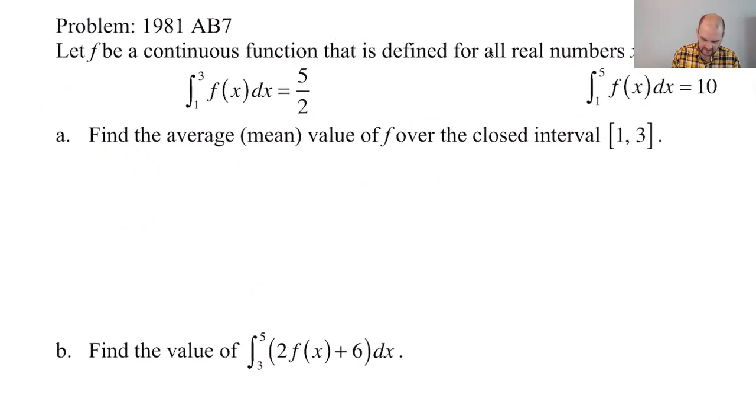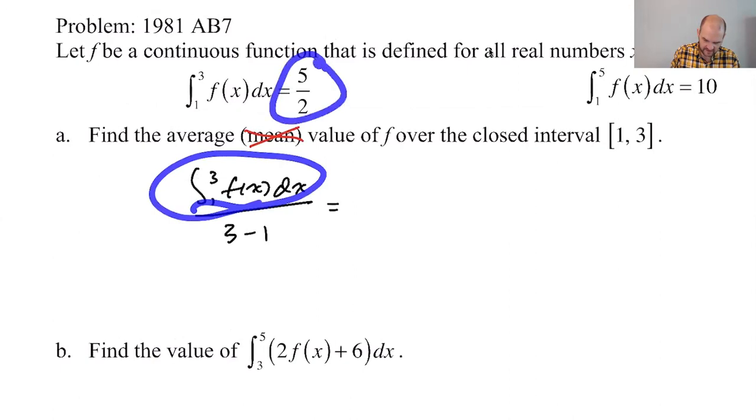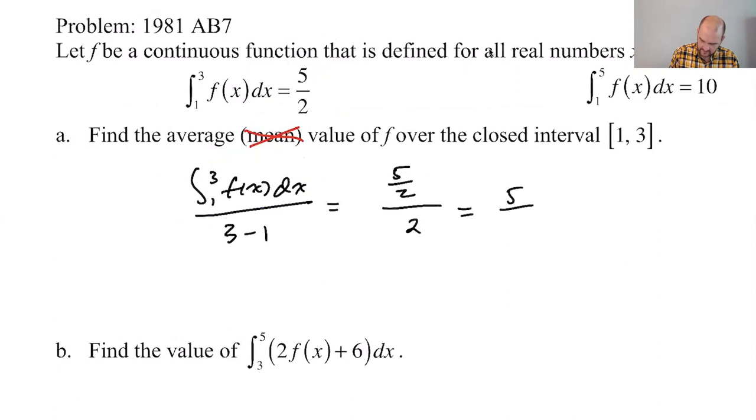So let's see, find the average value of f on the closed interval from one to three. I mean the average value. They don't do this anymore. They'll just say the average value. So the average value should be the integral over the interval, which this is given. So this value is five halves. This is suspiciously easy. Five halves over two, which is five over four.